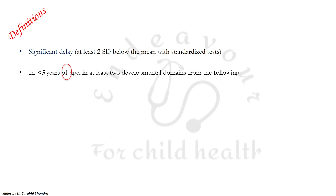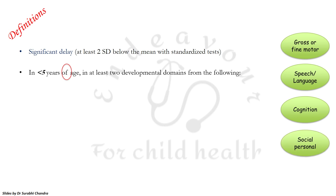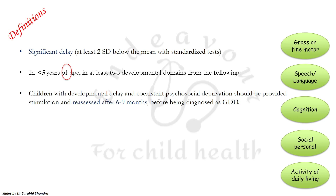As per the Indian Academy of Paediatrics, you assess developmental delay in the following 5 domains: gross or fine motor, speech or language, cognition, and social-personal and activities of daily living. This is in contrast with most textbooks which mention 4 developmental domains, i.e. gross motor and fine motor as separate domains, speech or language, and social-personal.